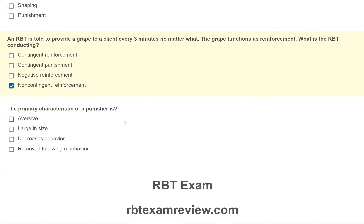Question nine: the primary characteristic of a punisher is what? A punisher decreases behavior — that is the main thing. Does it have to be aversive? No. Does it have to be large in size? No. Is it removed following a behavior? That's only true of negative punishment, not positive punishment, so it's not the primary characteristic. The only primary characteristic listed is that a punisher decreases behavior.